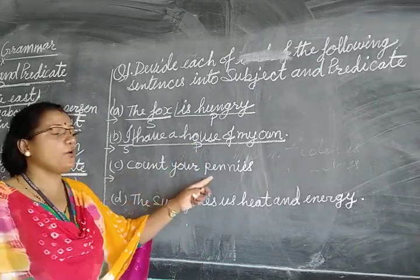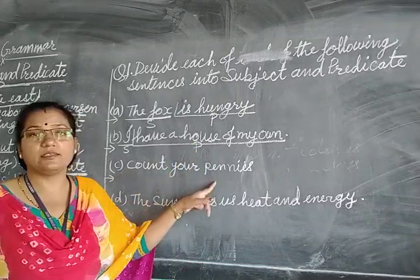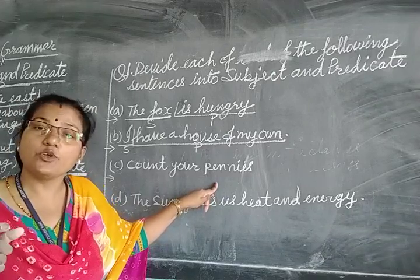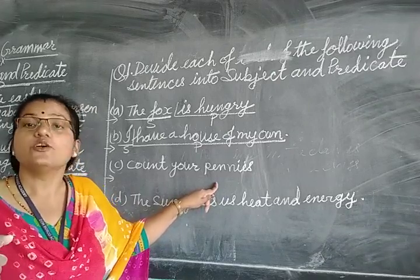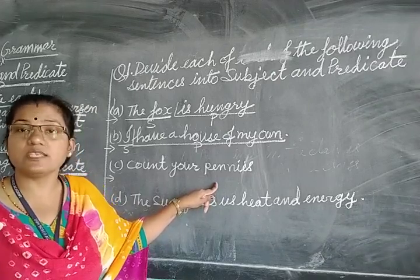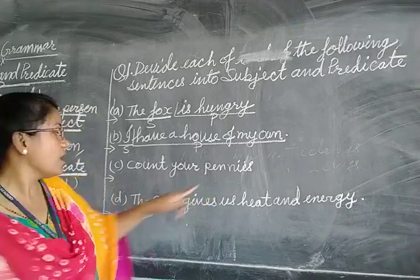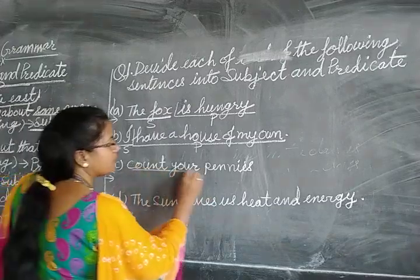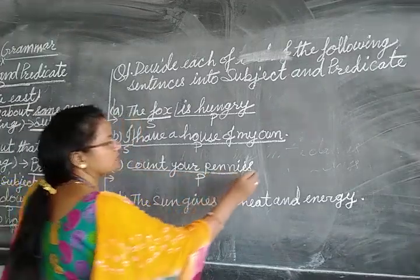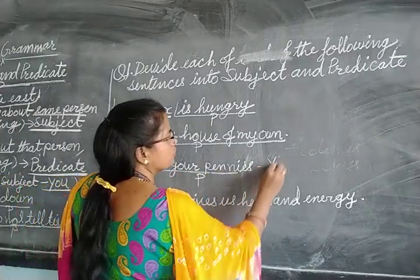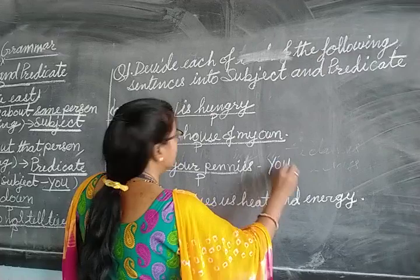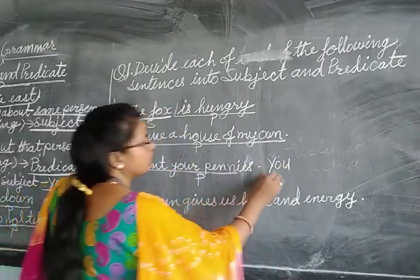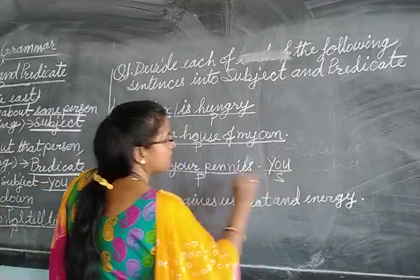Next: 'Count your pennies.' This is an imperative sentence. The entire phrase 'count your pennies' is the predicate, and the subject is 'you' — understood. The proper sentence would be: 'You count your pennies,' so 'you' is the subject.